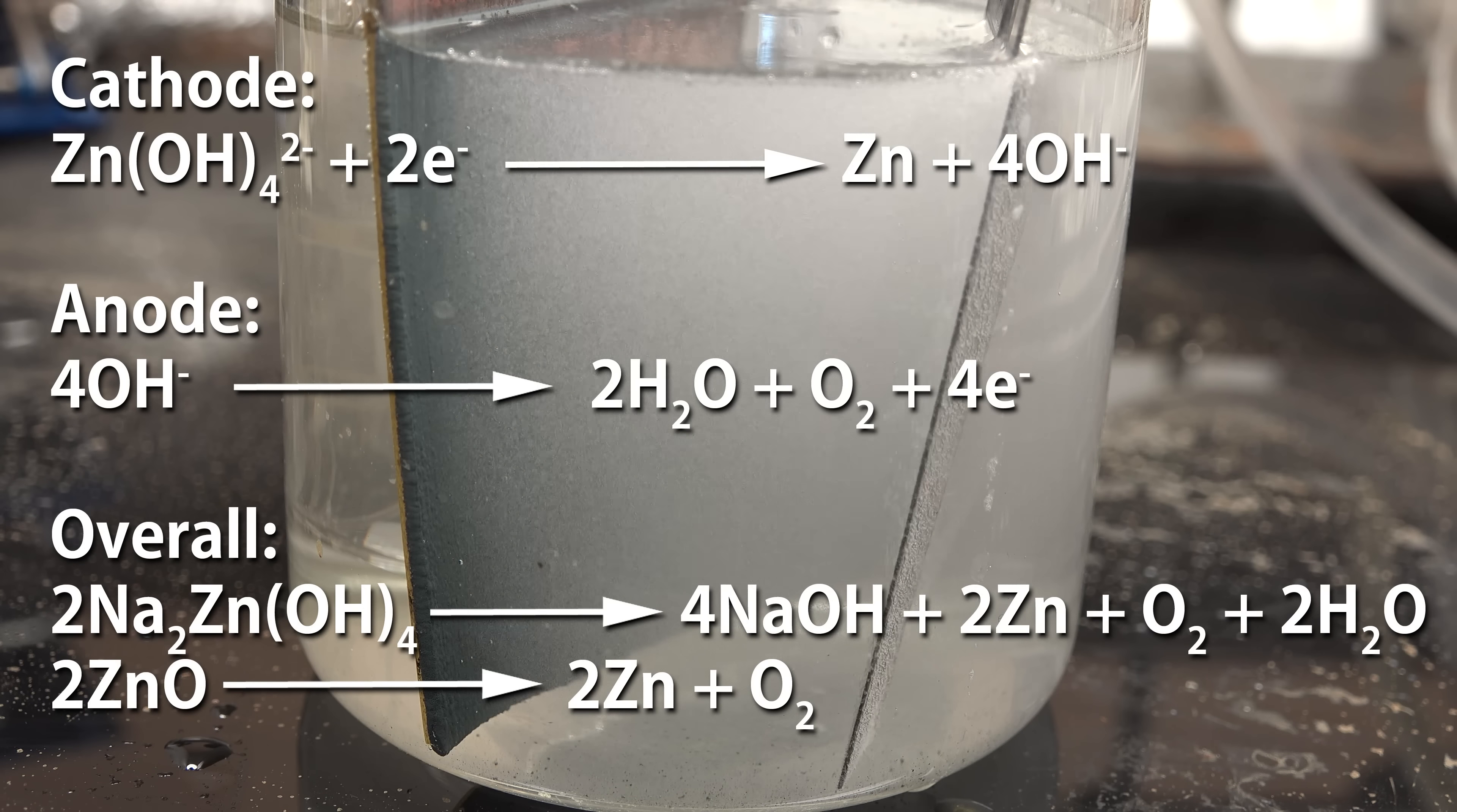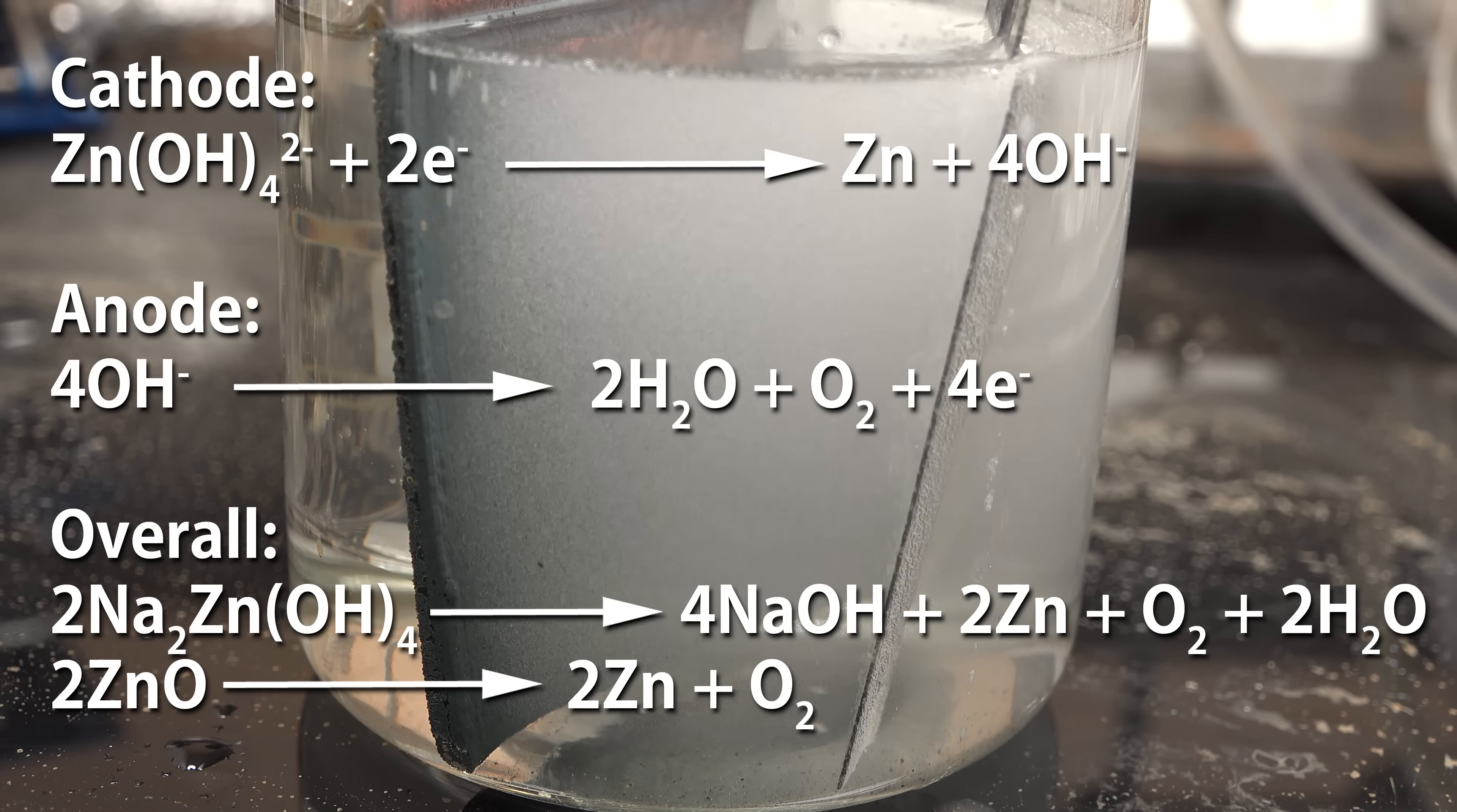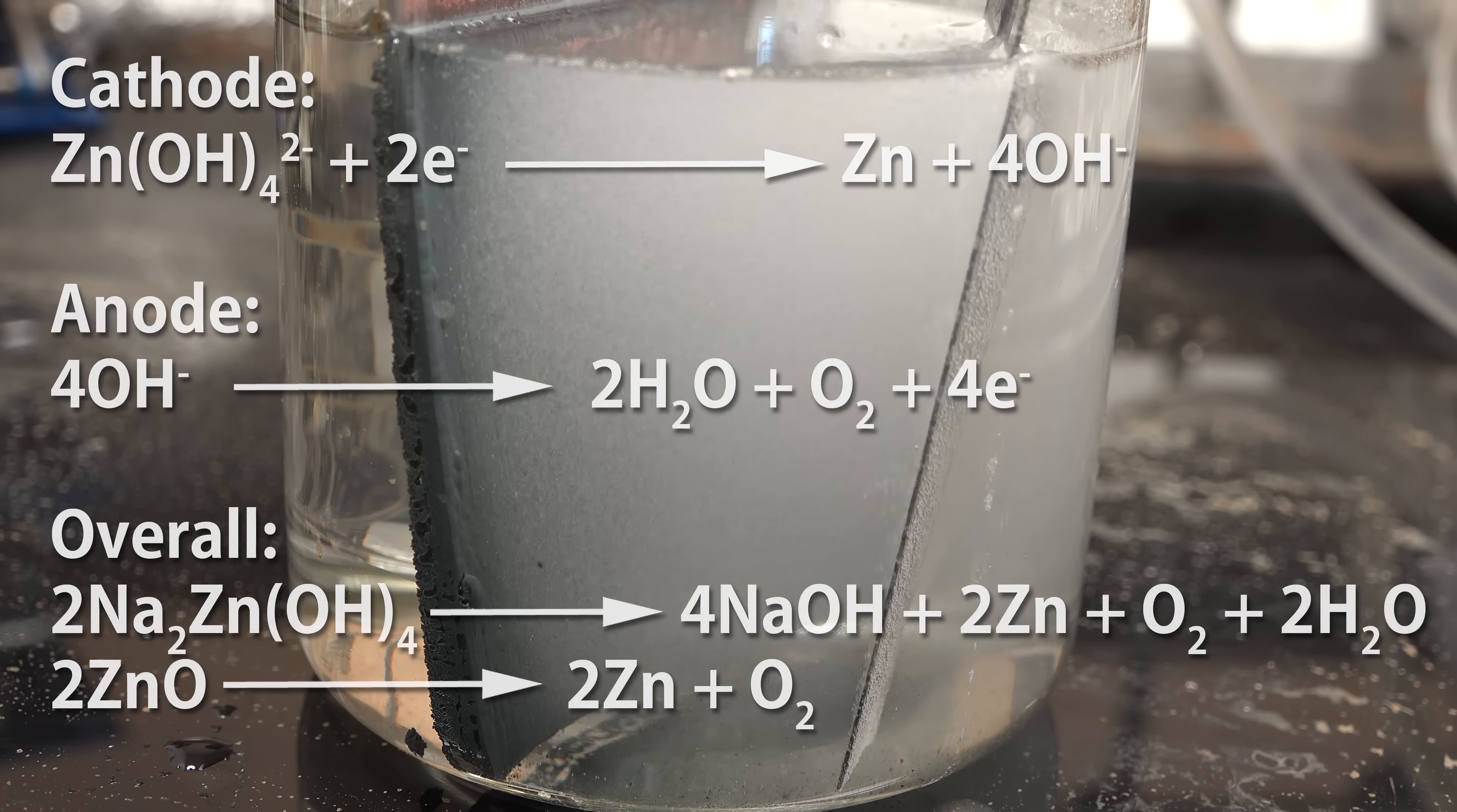What's happening is that at the cathode the zincate ions are being reduced to zinc metal as well as hydroxide. At the anode the hydroxide ions are oxidized to oxygen. Overall we're converting sodium zincate into sodium hydroxide, zinc metal and oxygen. Now sodium hydroxide was what we originally used to dissolve the zinc oxide so it's really just behaving as a carrier. What we're essentially doing is splitting zinc oxide.